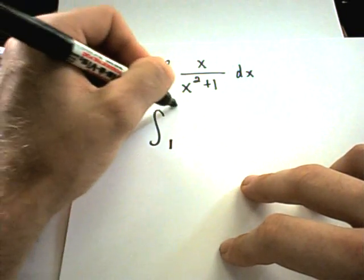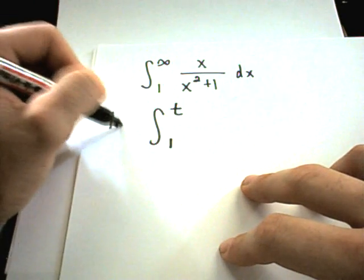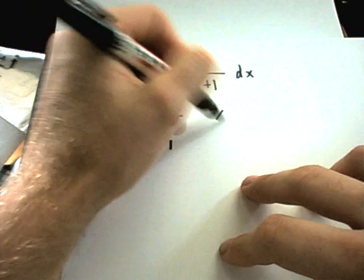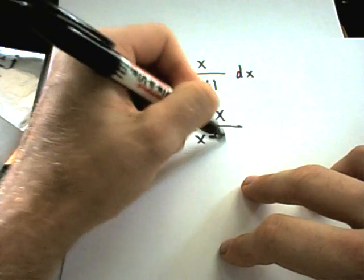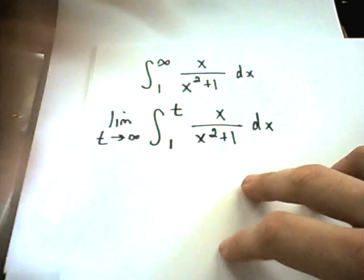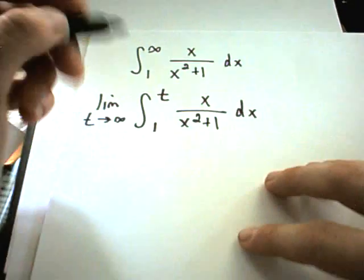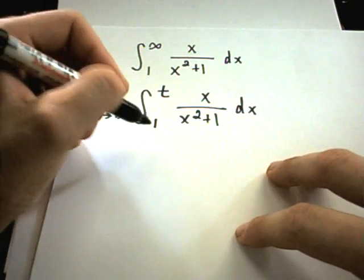Remember, you replace the infinity with a t. The limit as t is going to infinity, I've got x over x squared plus 1. And now this is when my integration skills kick in - I've got to remember how to integrate this thing. I've picked a relatively straightforward one.